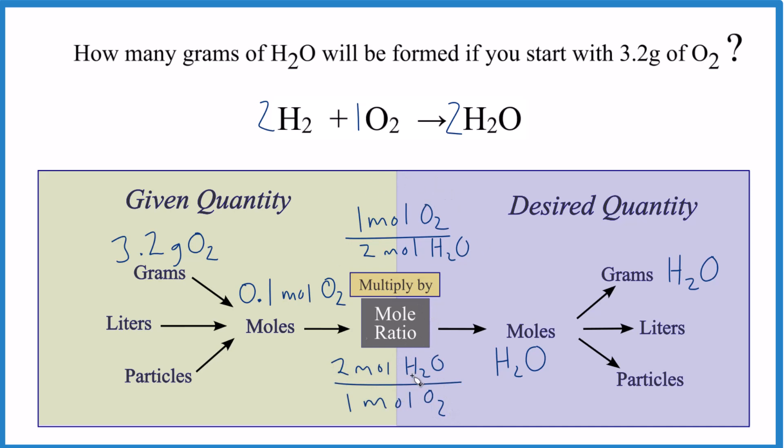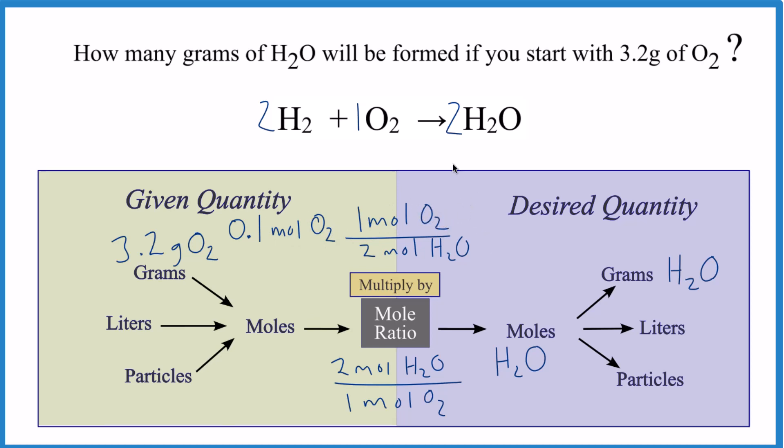We're going to multiply by one of these ratios. We want to end up with moles of water. So if I multiply 0.1 moles of O2 times this ratio here, I'd have moles of oxygen here and here. So I'd multiply them—I get moles of oxygen squared. That doesn't work, so we can't use this ratio here the way we wrote it.